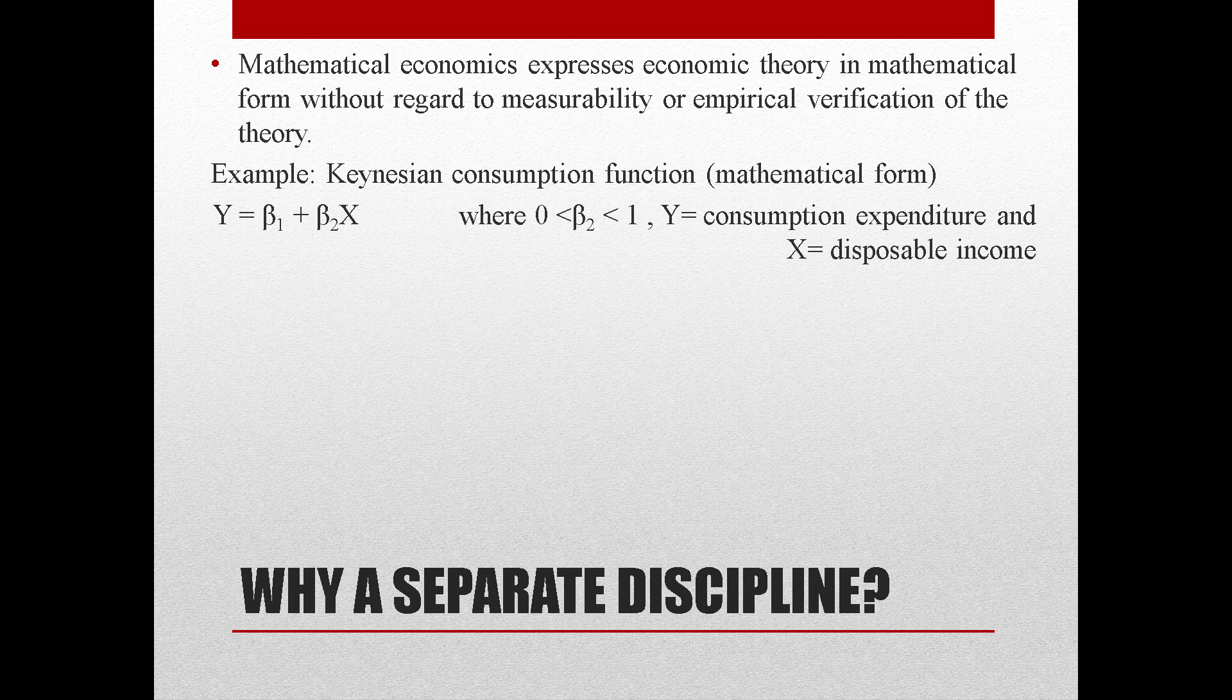But the thing is, this type of relationship is of very limited interest to the econometrician because it assumes that there is an exact relationship. But relationships between economic variables are generally inexact. Thus, if we were to obtain data on consumption expenditure and disposable income of a sample and plot the data on a graph, we would not expect all observations to lie exactly on the straight line.